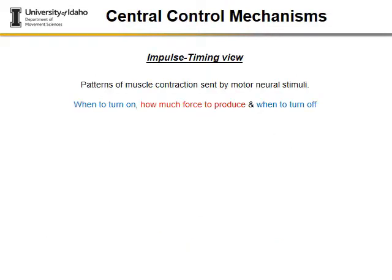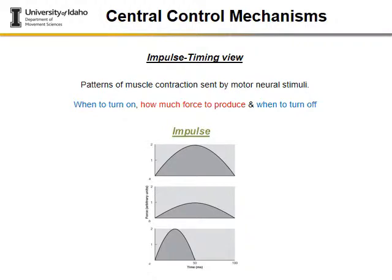One thing to discuss is the patterns of muscle contraction and the impulse timing sent by motor neurons. Impulse is force times time — when a muscle is turned on, the quantity of force, and when it is turned off. You take a force-time curve and integrate it. On the y-axis you have magnitude of force, and on the x-axis time in milliseconds. The area under the curve gives you the impulse — force times time.